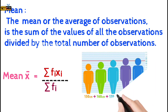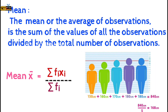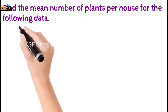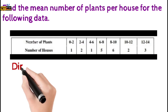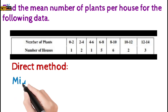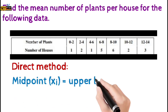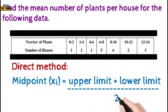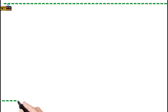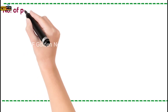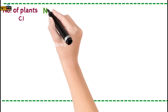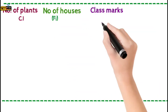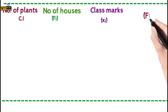Here is an example to find the mean. Let us find the mean number of plants per house for the following data. We will use the direct method. We have to find the midpoint by adding the upper limit and lower limit and dividing by 2. First draw the table with number of plants (class interval), number of houses (frequency), class marks xi, and fi × xi.